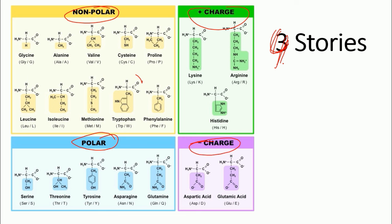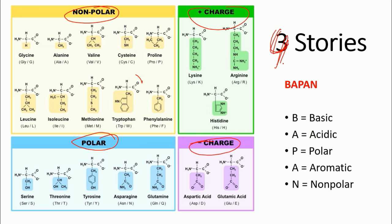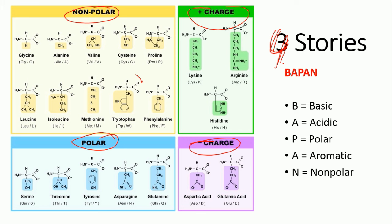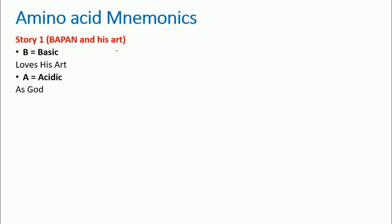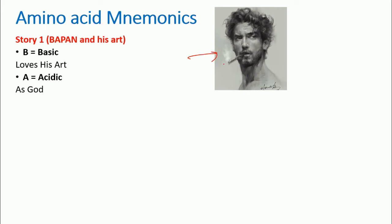The first story is based on a Bengali guy named Bapan. B stands for Basic, A stands for Acidic, P stands for Polar, A stands for Aromatic, and N stands for Non-polar. These are the five separate types of amino acid properties we are going to study. We'll look at each type and remember the amino acids placed in each category — that's the story of Bapan and his art.